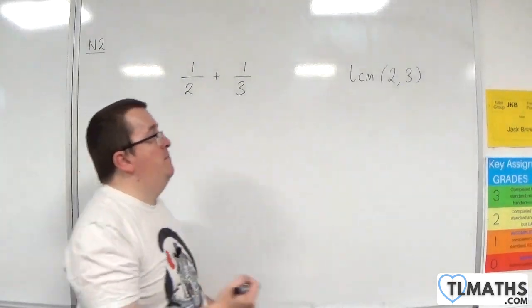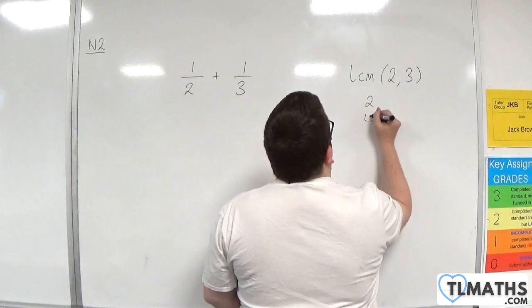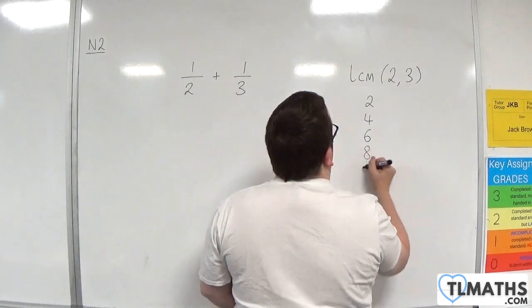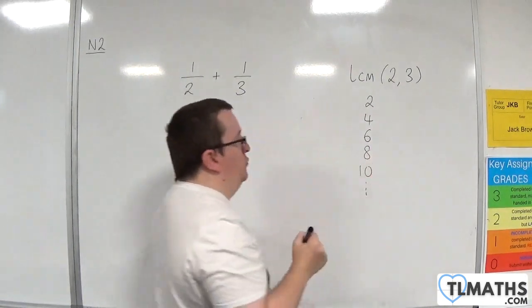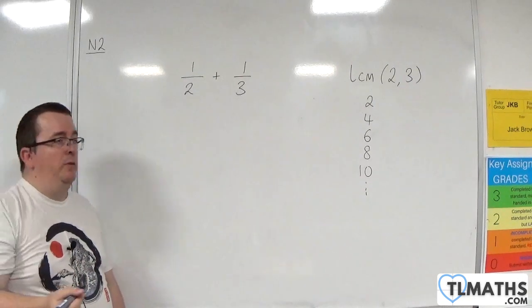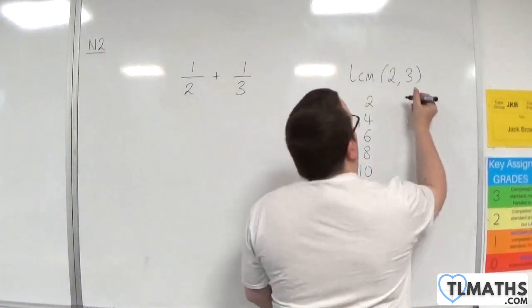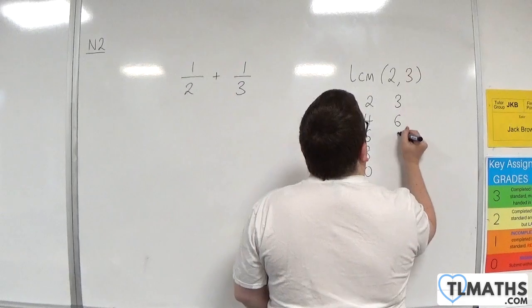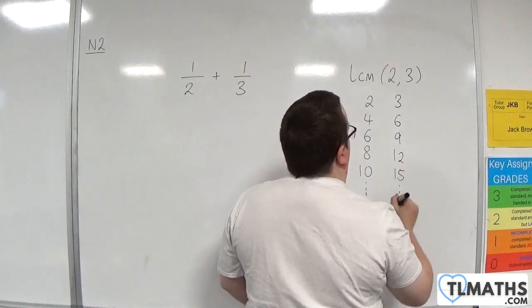We look at the multiples of 2: 2, 4, 6, 8, 10, etc. So it's essentially the 2 times table. We look at the 3 times table: 3, 6, 9, 12, 15, etc.